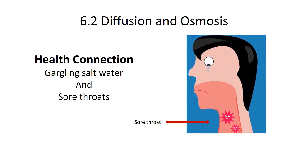Here's a health connection. Gargling with salt water for a sore throat — an old home remedy — actually works. A sore throat is caused by inflammation of those cells, which irritates the nerves. When you gargle with salt water, especially warm salt water, that salt water is hypertonic to your inflamed cells. It actually pulls the water out of your cells and reduces the inflammation, making your throat feel better.